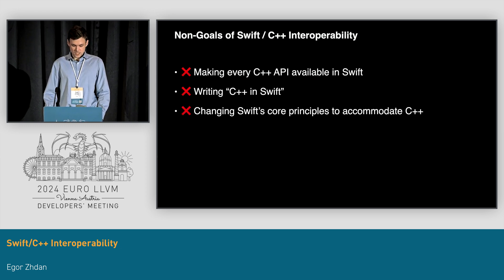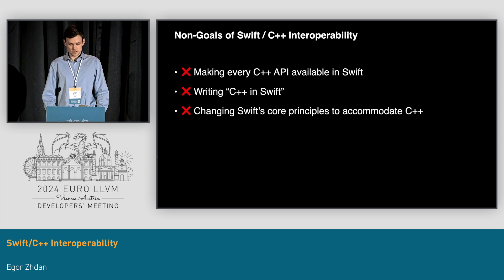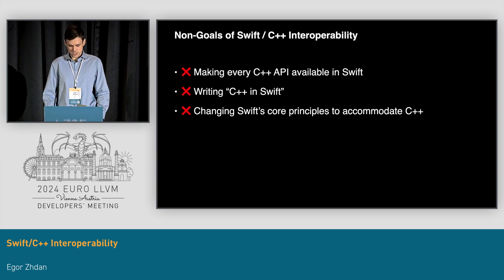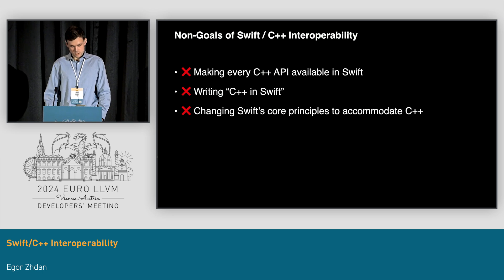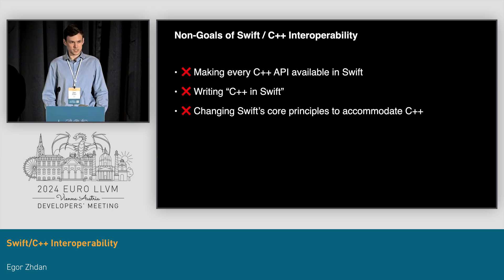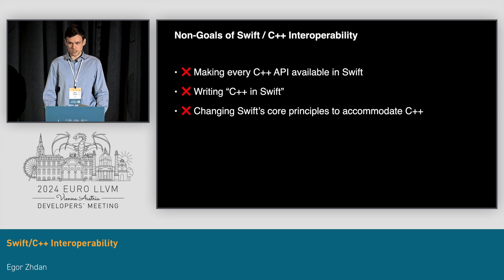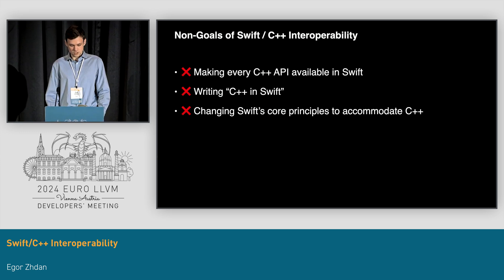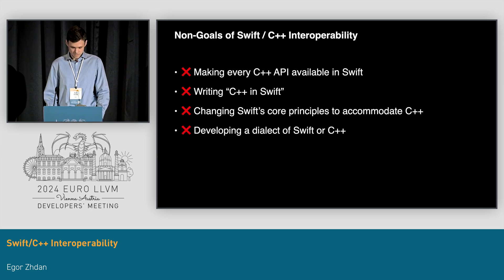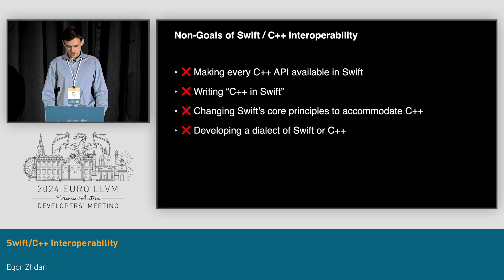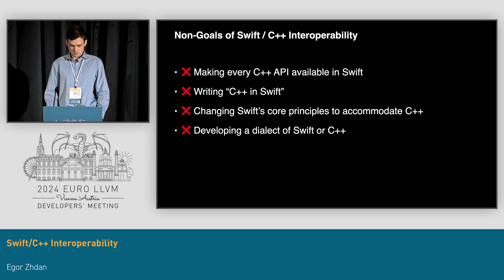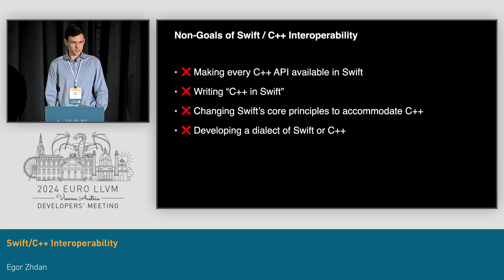Making fundamental changes to the Swift language for the sole purpose of better matching C++ idioms is also a non-goal. For instance, we will not introduce a C++-style preprocessor into Swift, just because it would allow us to better interoperate with certain C++ APIs. We are also not going to be adding SFINAE into Swift. And last but not least, developing a dialect of either C++ or Swift for this purpose is also a non-goal.